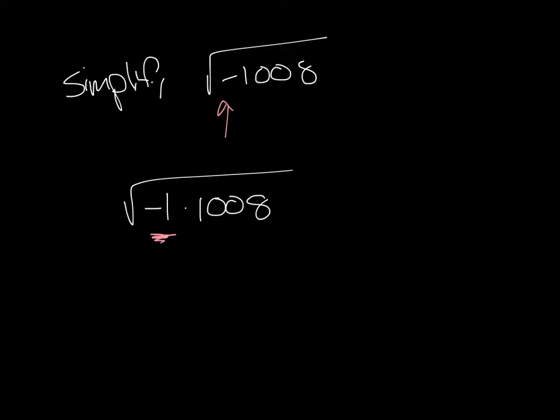I'm now going to write the prime factorization of 1,008. I did some of that work on the side here. So I've got negative 1, and then times the prime factorization of 1,008 is 2 to the 4th times 3 squared times 7.